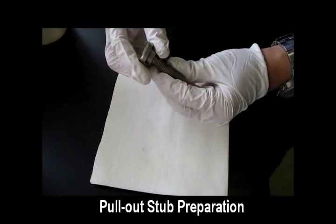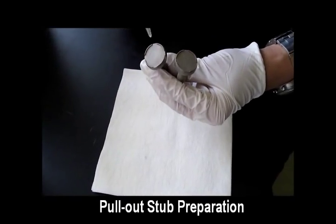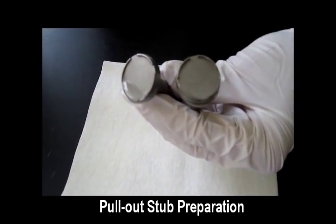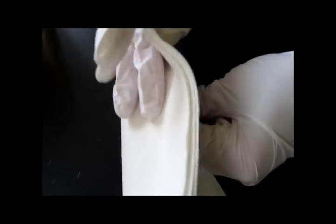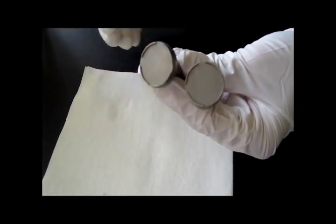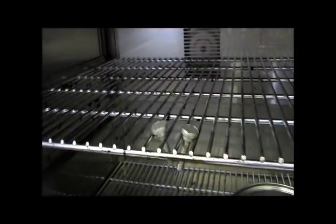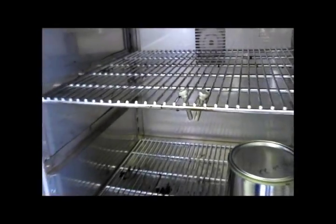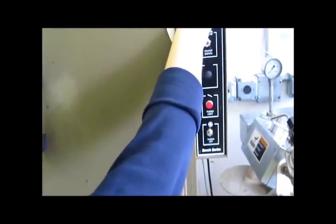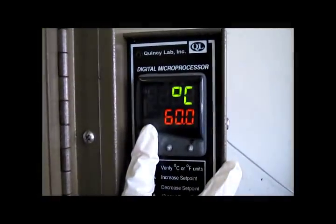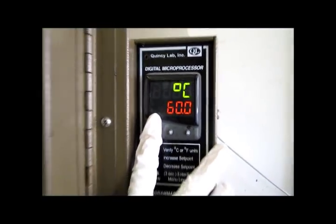The surface of the pull-out stubs is degreased with acetone to remove moisture and dust, which could affect adhesion. After cleaning with acetone, the pull-out stubs are heated in the oven at 60 degrees Celsius for a minimum of 30 minutes to remove absorbed water on the stub surface.